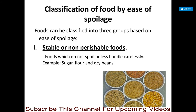On the basis of susceptibility to spoilage, foods are classified into three groups. The first is stable or non-perishable foods — those which do not spoil unless handled carelessly. Examples include sugar, flour, and dry grains or beans.